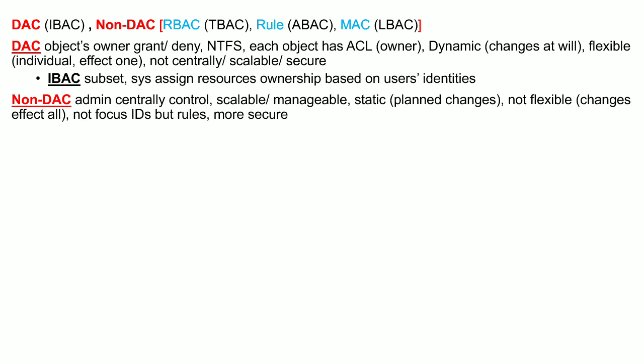Non-discretionary access control is a major category containing multiple sub-categories. In this model, the administrator centrally manages and controls access to the entire environment. This model is more scalable and manageable, and it is more static compared to discretionary access control, because changes are not made dynamically at the will of individual owners — rather, they are planned centrally by the administrator.